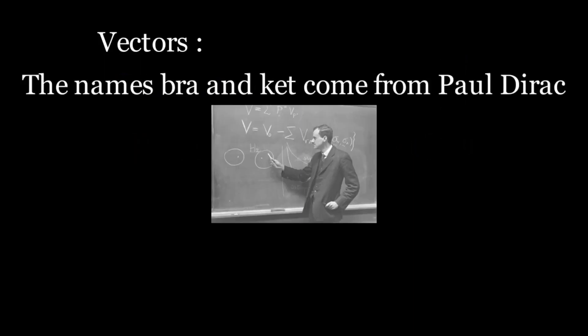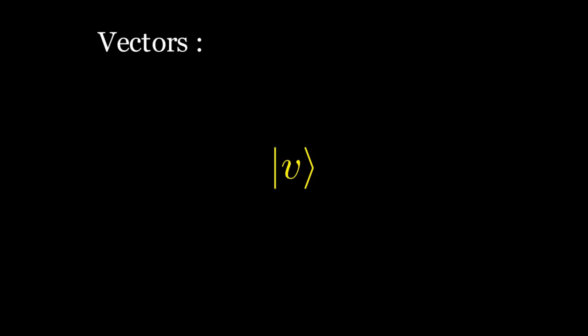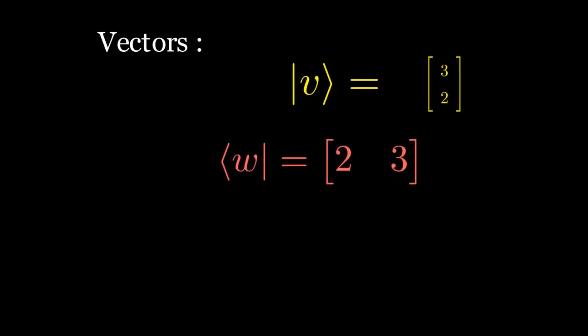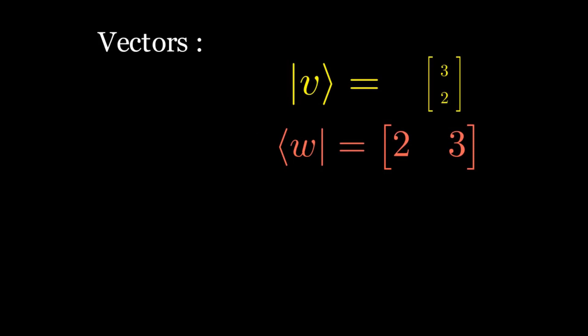The names bra and ket come from Paul Dirac. Dirac was one of the founders of quantum mechanics, and his notation is used extensively throughout both quantum mechanics and quantum computing. He introduced notation for naming these two types of vectors: a ket with the name v is denoted by |v⟩, and a bra with the name w is denoted by ⟨w|. So we might write ket v as a column vector and bra w as a horizontal vector.